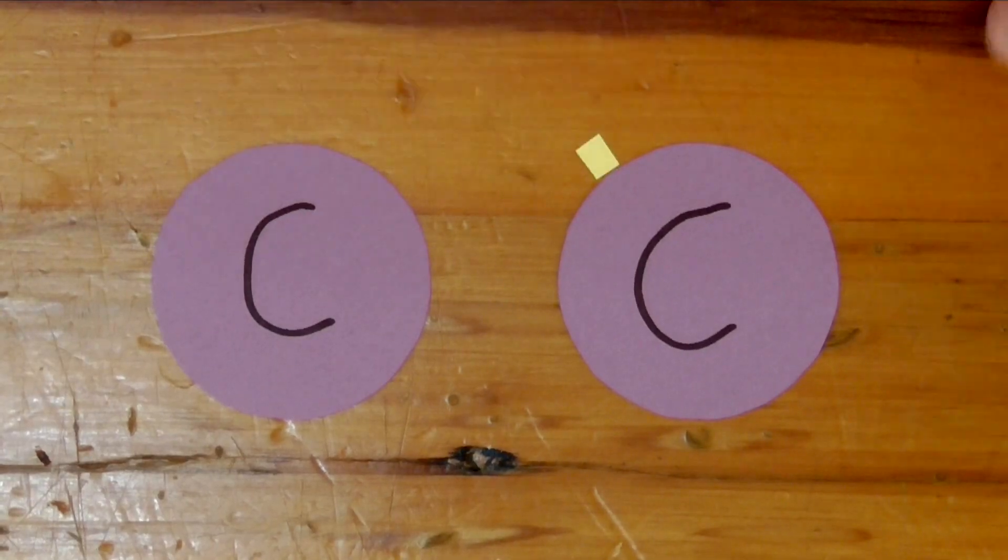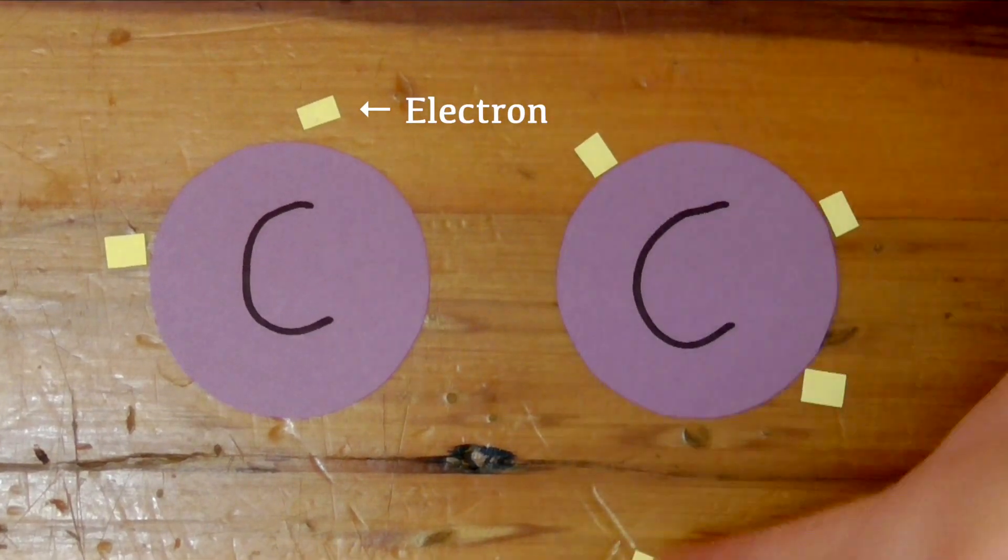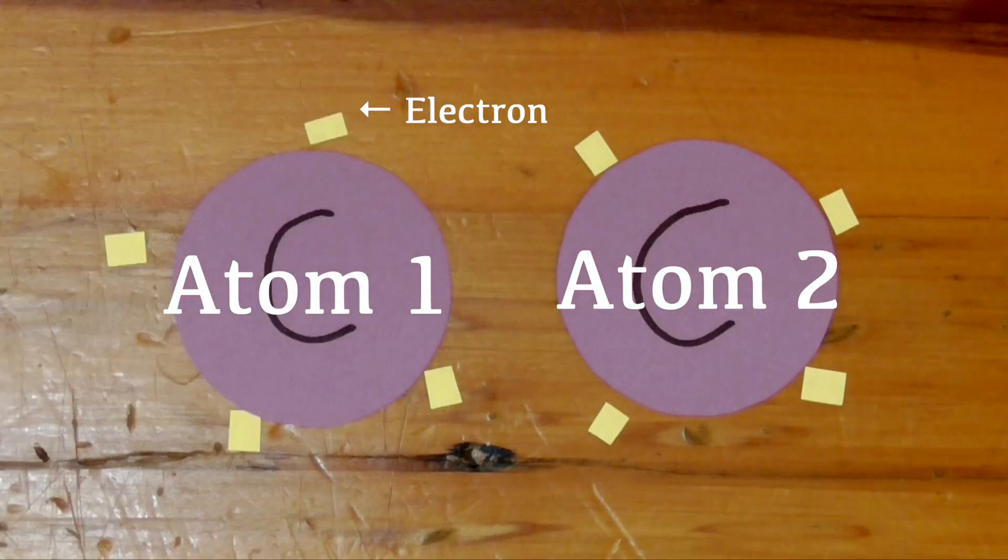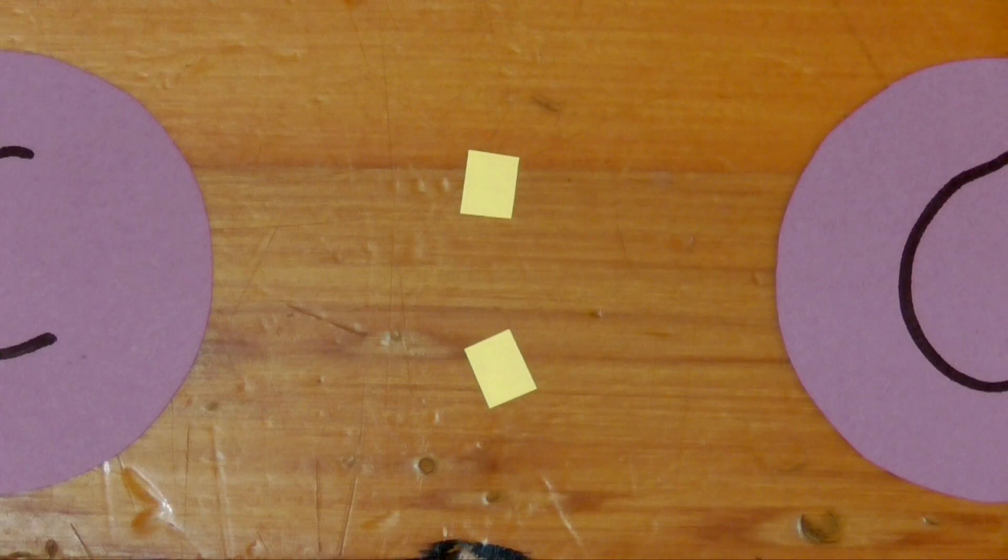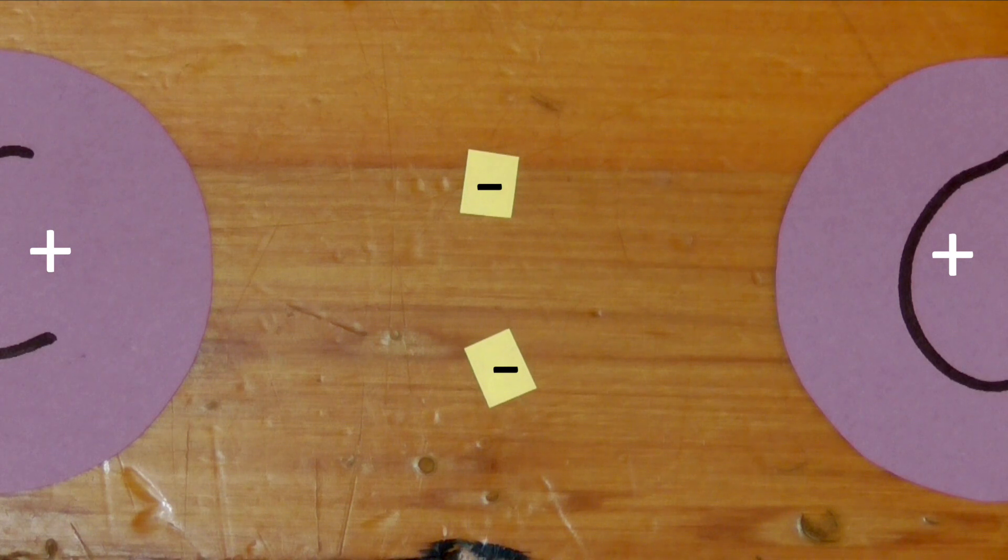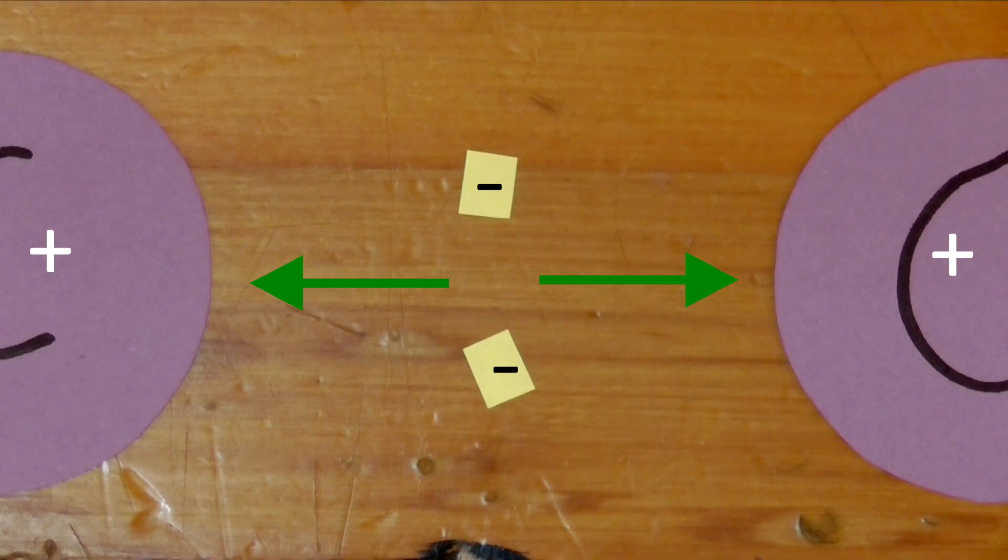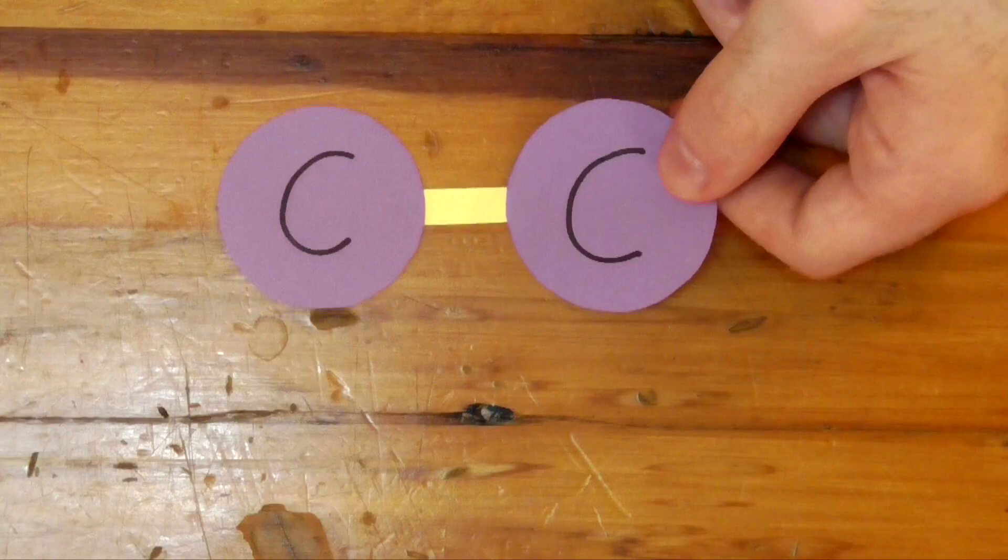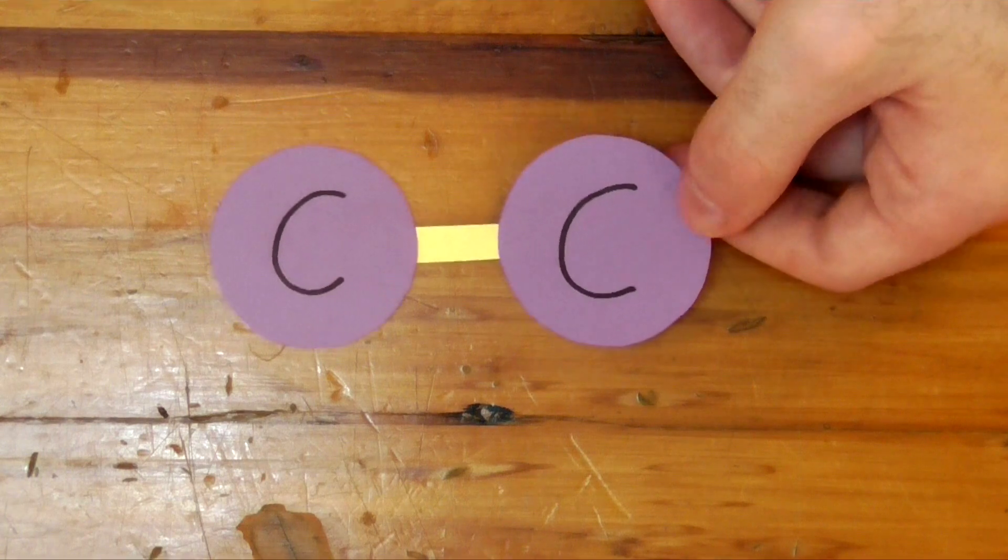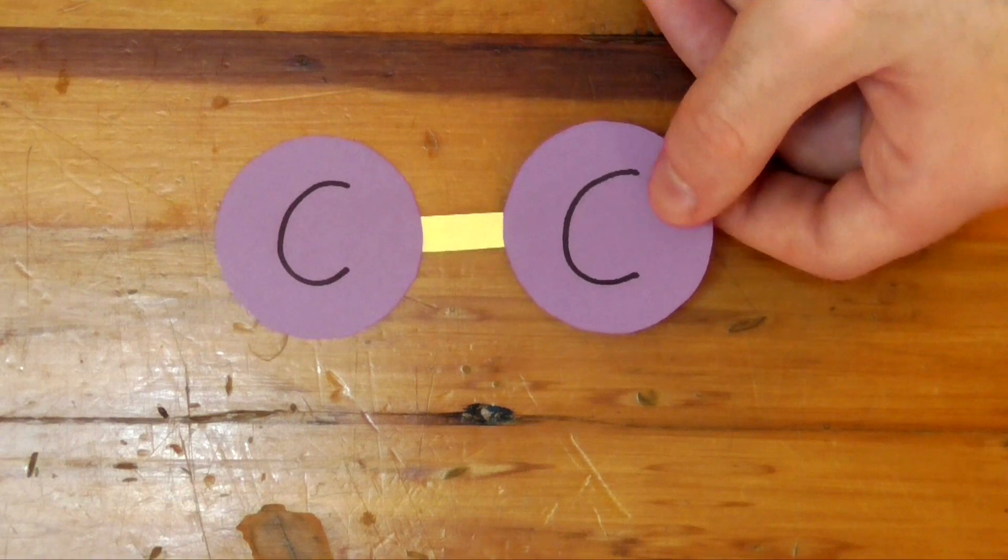A covalent bond consists of an even number of electrons, usually two. Those electrons come from two neighboring atoms, and they are shared equally by both atoms. The electrons, being negatively charged, are attracted to the positively charged nucleus of each atom. As you can see in this diagram, the overall attraction is equal in both directions, and it's enough to hold the atoms in place. Thus, they are bonded together.